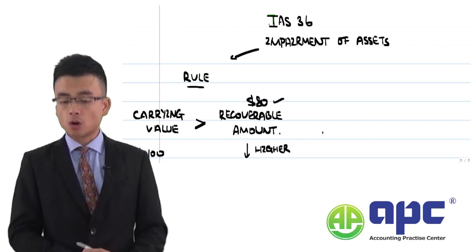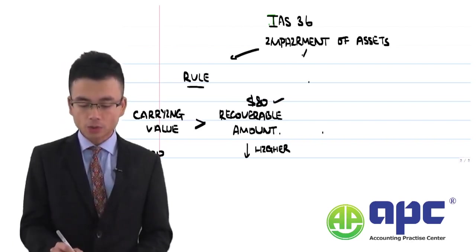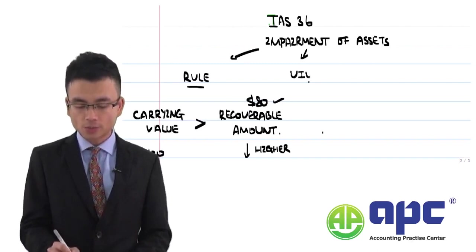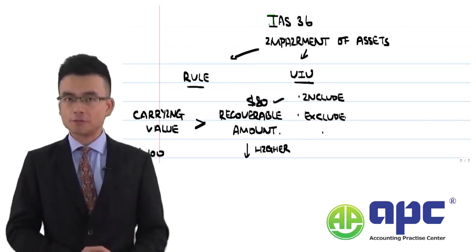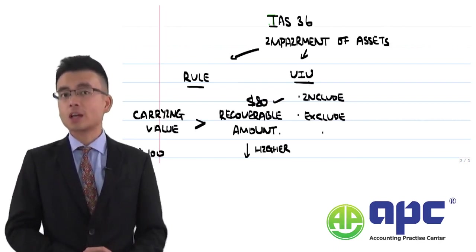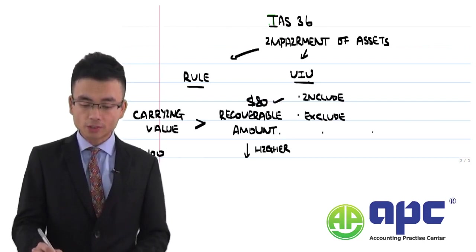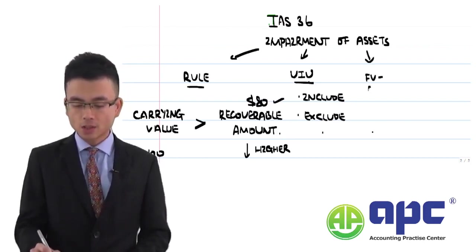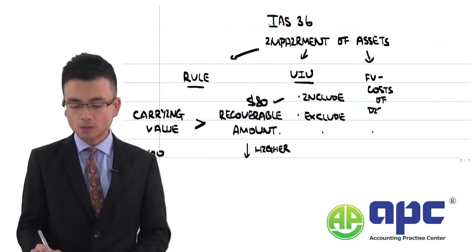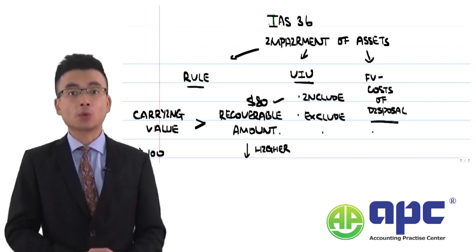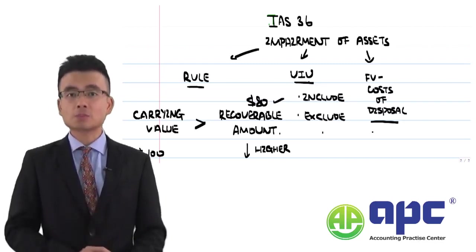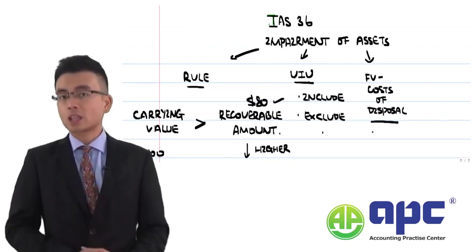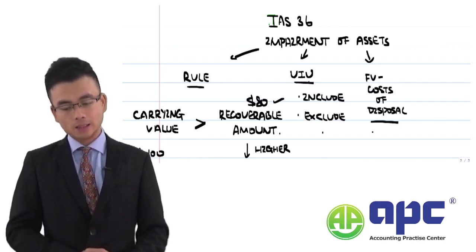Once we've understood the rule of impairment, the next thing we'll cover is how to determine the value in use (VIU) — specifically, what cash flows can be included and excluded when calculating the present value of future cash flows generated by the asset if used in the longer term. We'll also look at fair value less cost of disposal, which means the net proceeds to your business, including how to determine fair value and the cost of disposal.